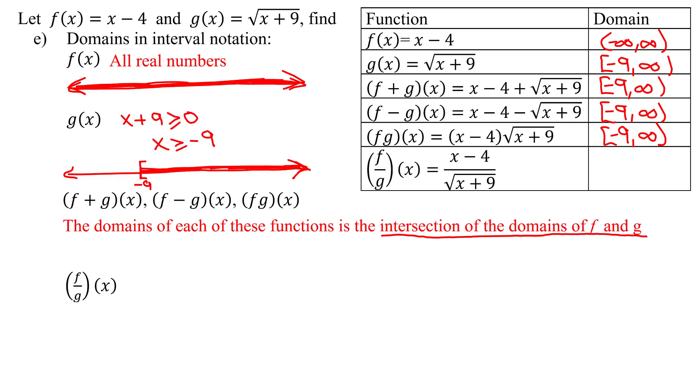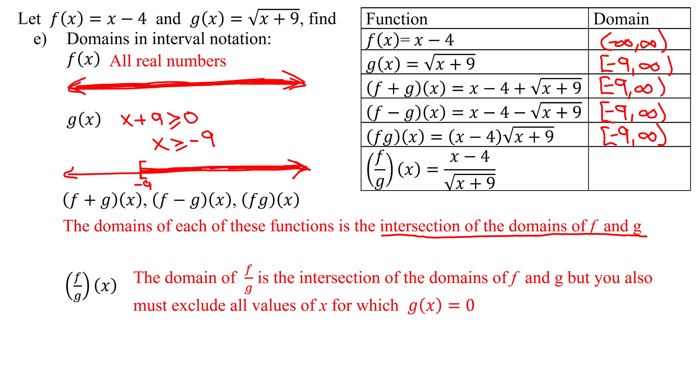And lastly, I need to find the domain of the quotient function f divided by g of x. Well, the domain of this function is the intersection of the domains of f and g, but you also must exclude all values of x for which g of x is equal to 0. So when is g of x equal to 0? When is the square root of x plus 9 equal to 0?